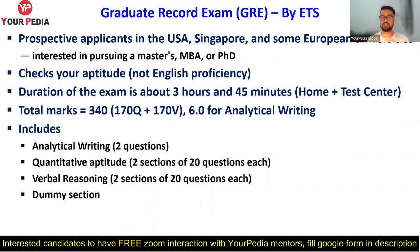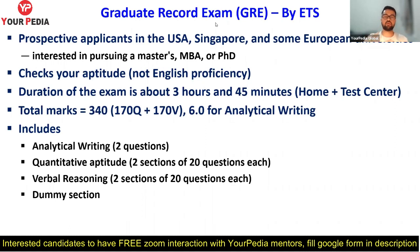If you are targeting Ivy League universities like MIT or Stanford, they will check your analytical writing score also. This exam has three types of sections. First is analytical writing — you will get two questions and 30 minutes per question to write essays. Sometimes you find this section at the very beginning and sometimes at the end. Once this section is over, you will get a break of five to ten minutes, after which your actual exam starts with either the English or quantitative aptitude section.